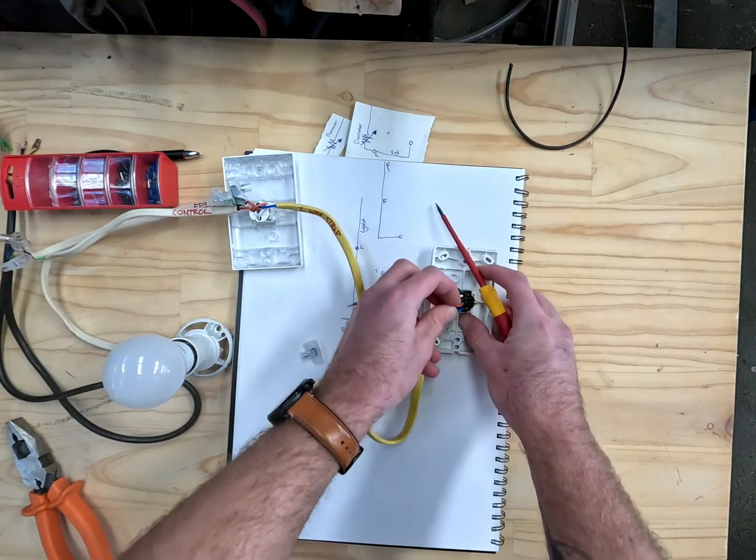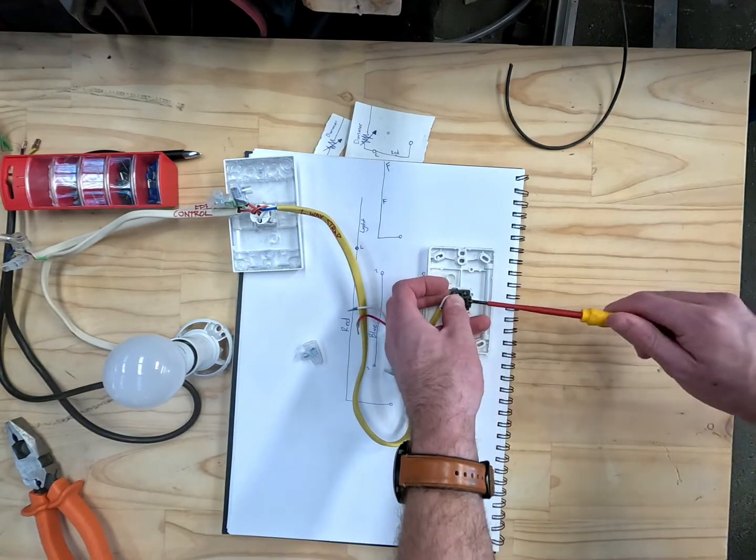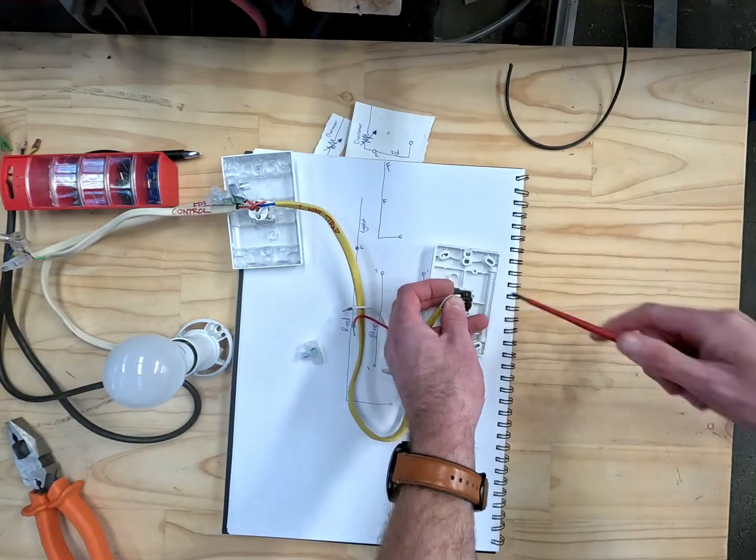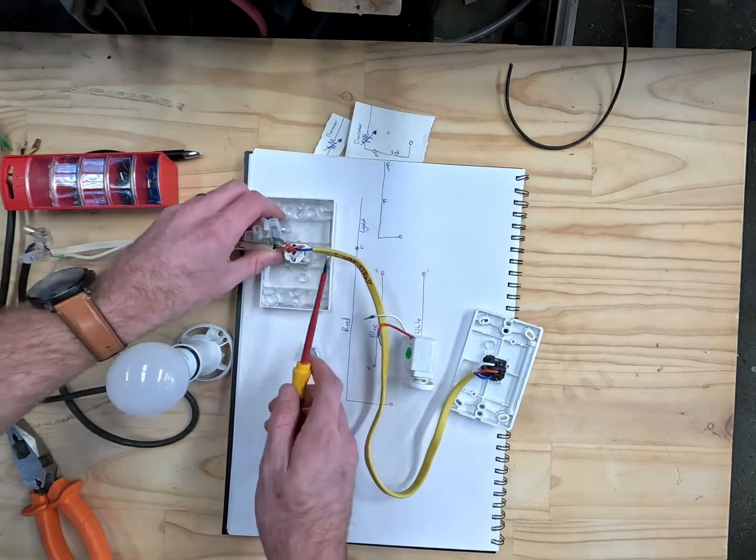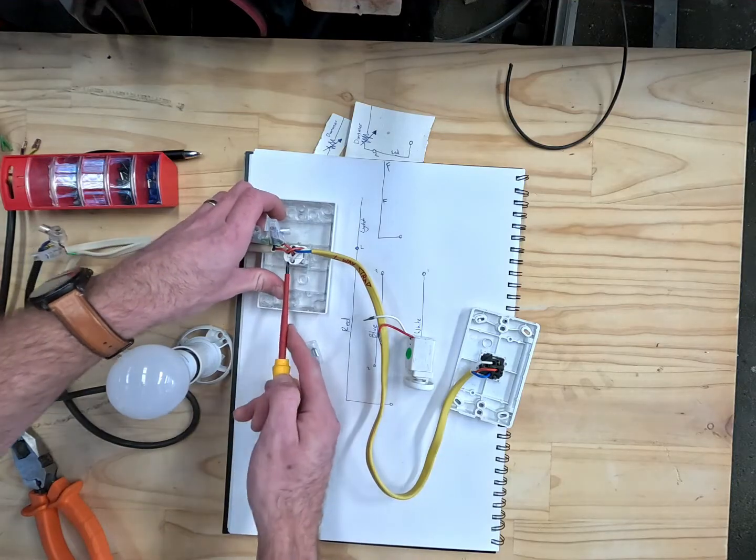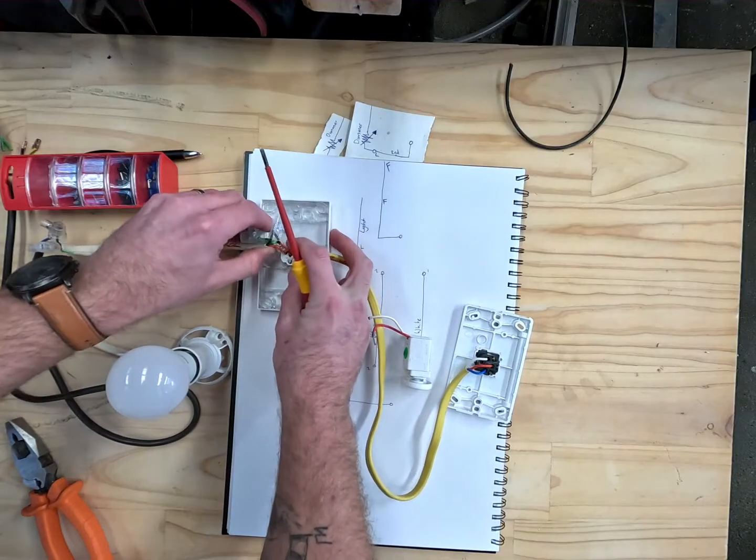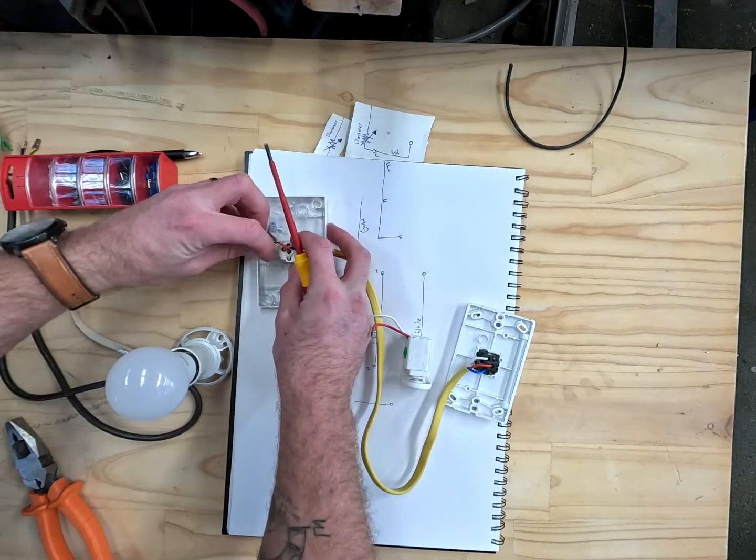So we need to move the common back into the center pin over here, the red back into the common of the light switch. And then we need to take the red and the light control out of the common on this switch. We'll continue using this loop terminal.